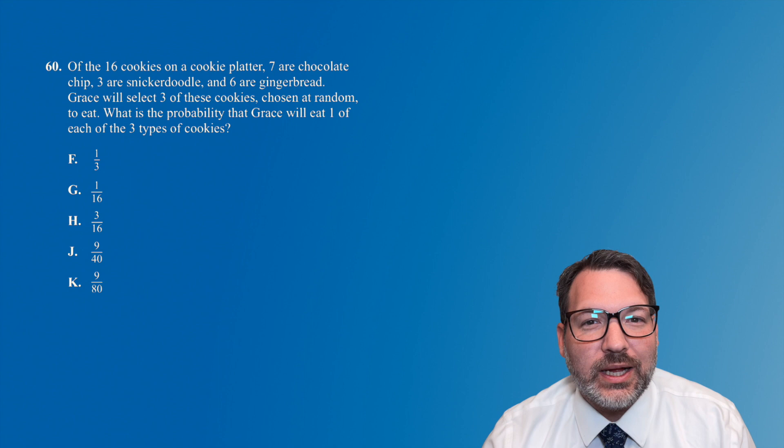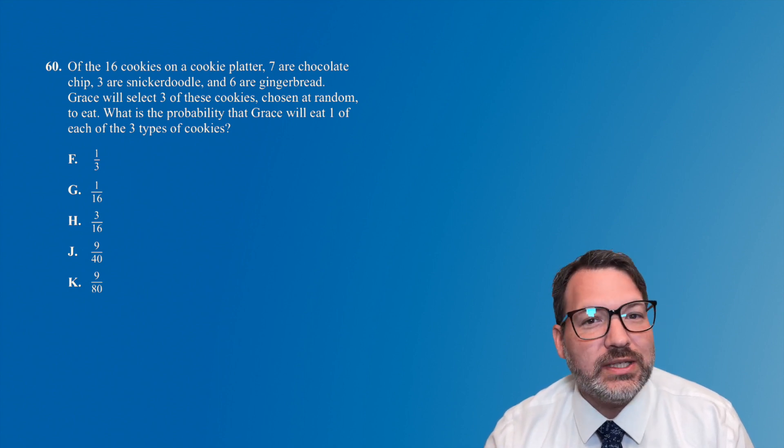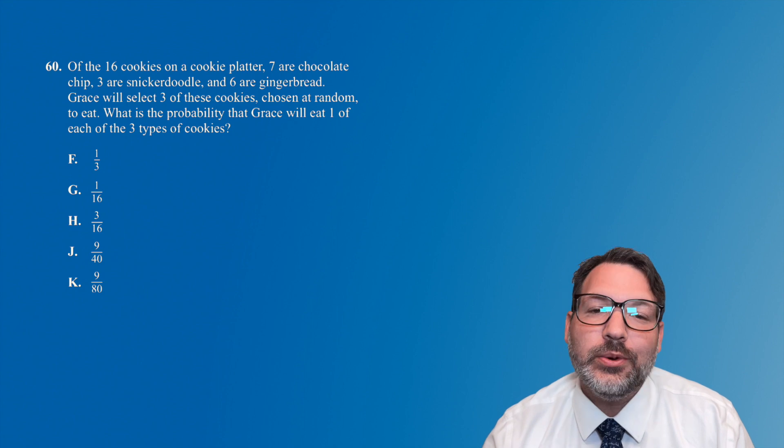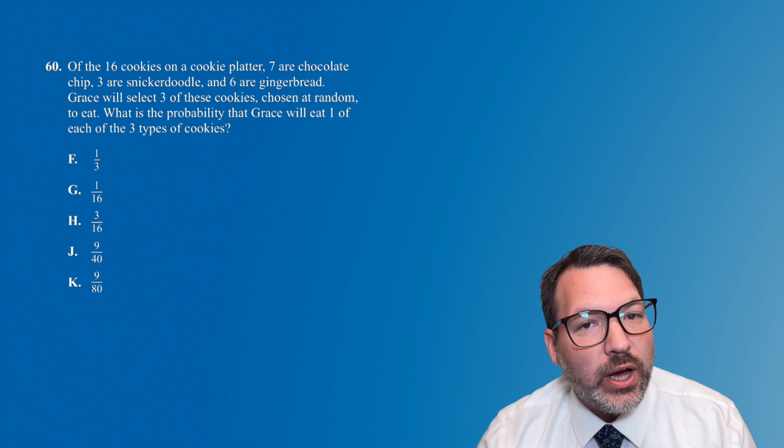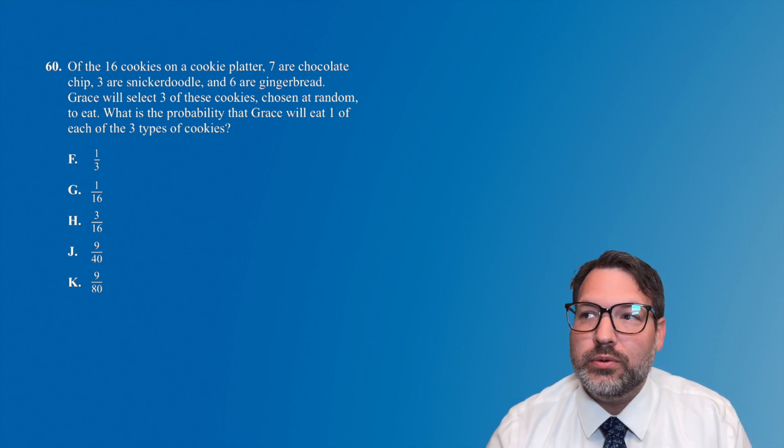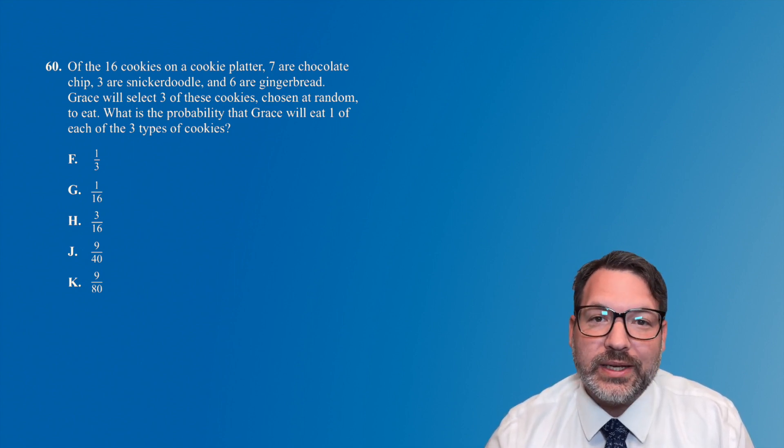For example, probability is not something that we typically have a dedicated class for. It just kind of gets shoved into the end of a bunch of other classes, and so it's entirely possible that you could be reading a question like this number 60 here, which, if you know about probability and how to compute combinations and permutations, is not terribly difficult, but if you don't, would be basically impossible to answer.